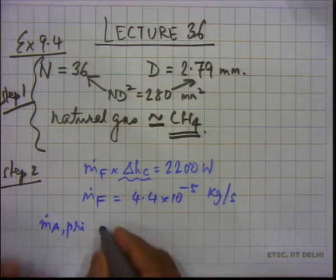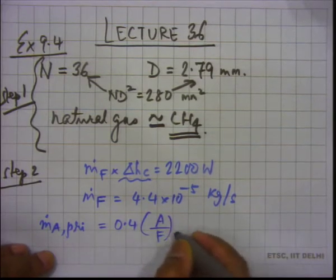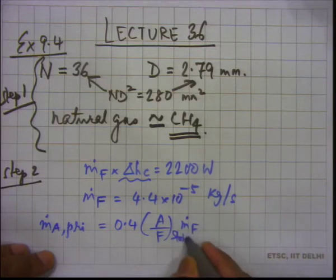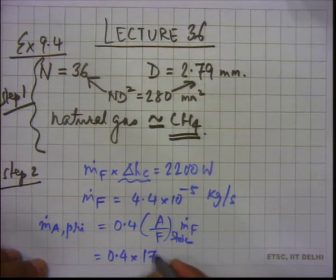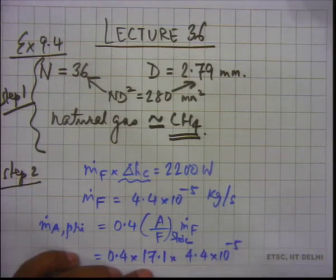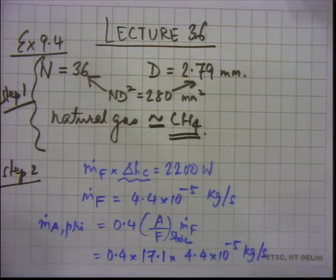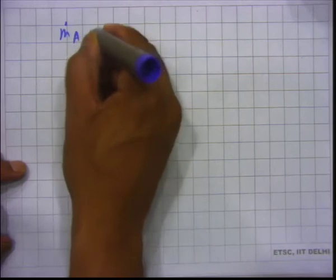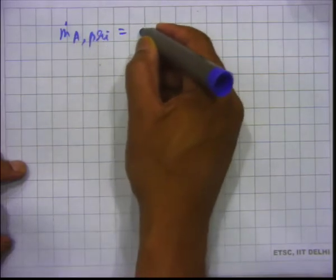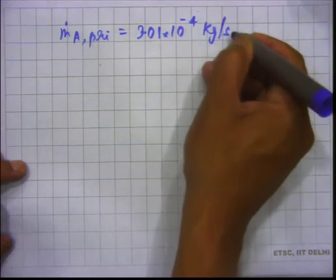We calculate ṁ_a primary as 0.4 times the stoichiometric air-fuel ratio times ṁ_fuel. The stoichiometric air-fuel ratio for methane is 17.1, so this is 0.4 × 17.1 × 4.4 × 10⁻⁵ kg/s, which works out to ṁ_a primary equal to 3.01 × 10⁻⁴ kg per second. Notice that even at only 40 percent of stoichiometric, the air mass flow rate is more than an order of magnitude higher than the fuel flow rate — that is expected since fuel is always a small fraction.